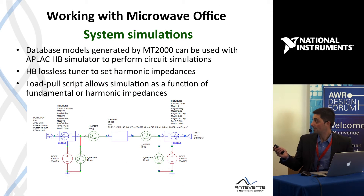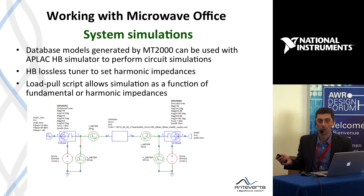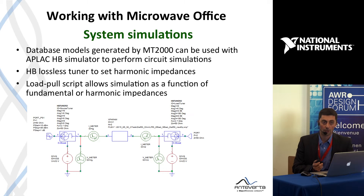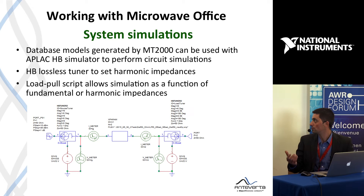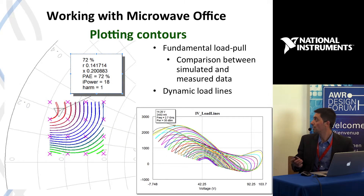The XMP data can be used in an X-parameter block to actually use in simulations with matching networks at the input and output. This uses the harmonic balance simulator. There's also a load-pull script in Microwave Office that allows you to plot contours and look at what's happening in terms of load-pull. Here you can see an example of the contours and load lines with this type of script.